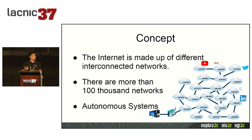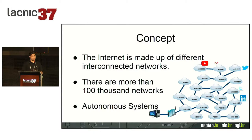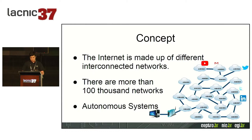Each autonomous system acts independently and we only have control over our own network, but we want to communicate with other networks. It's complex, so when there are problems we must make decisions to improve communication. We depend on others and must understand how the entire system works.